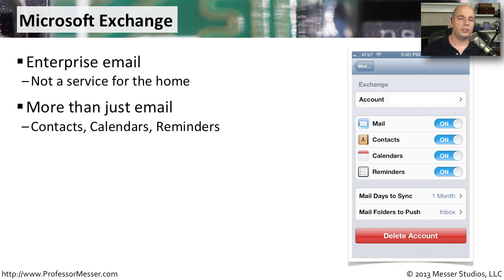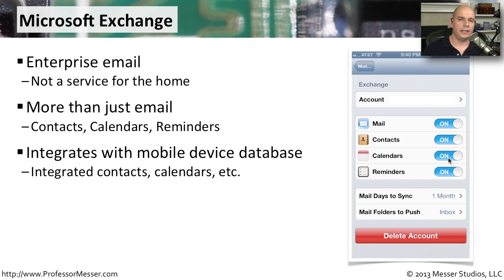Microsoft Exchange is more than just email. It's our centralized calendar, all of our contact lists are in there, and we can have notes inside of that application. We can synchronize and download all of those through the Microsoft Exchange configuration — customizing exactly what information is transferred between our mobile device and the Exchange server. You can create a calendar entry, attach different email addresses to it, and those are automatically sent out as messages informing everybody that a meeting has been scheduled. That's all integrated through Microsoft Exchange.